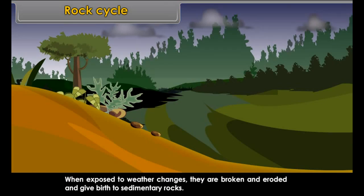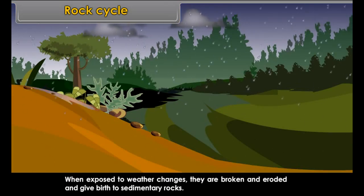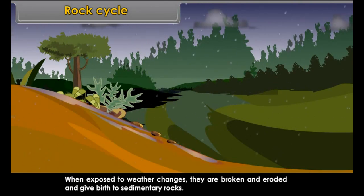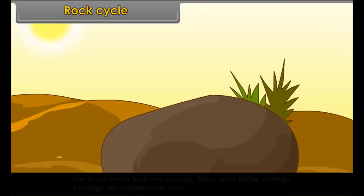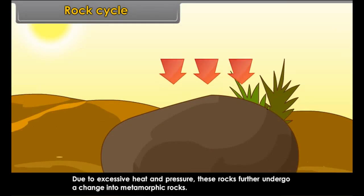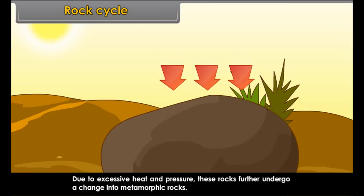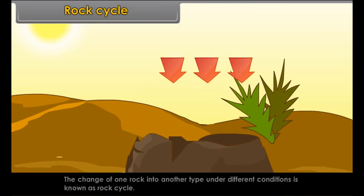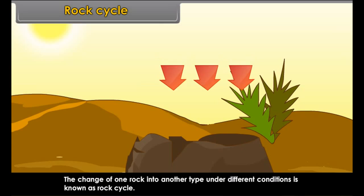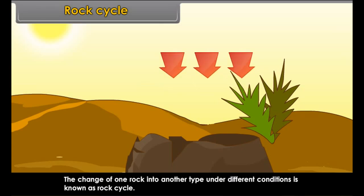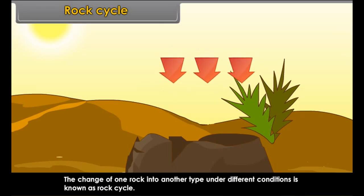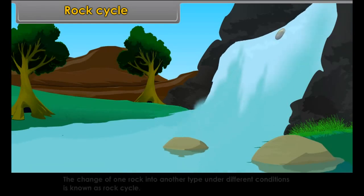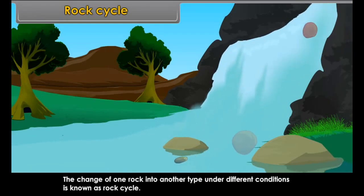Metamorphic rocks. Metamorphic rocks are either igneous or sedimentary rocks that have undergone a change due to excessive heat and pressure. Due to excessive heat, limestone changes into marble. Due to excessive pressure, shale changes into slate, coal changes into graphite, and sandstone changes into quartzite.